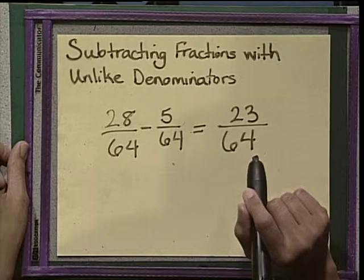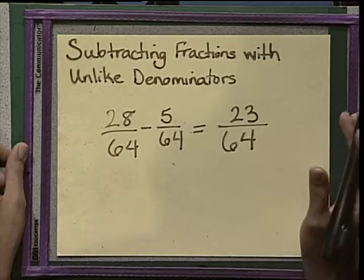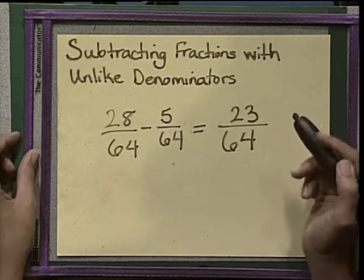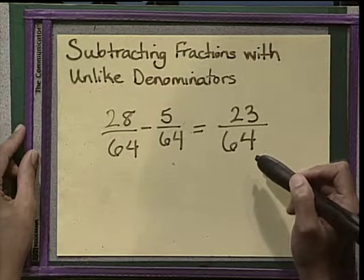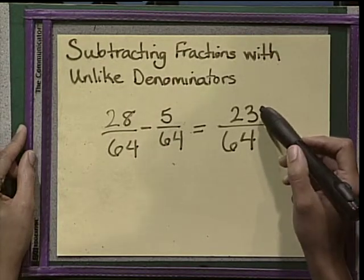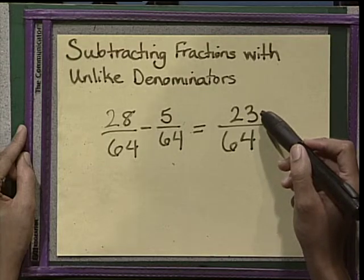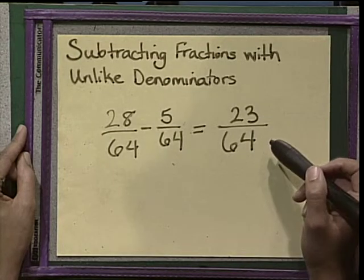You want to check to see if your fraction is in simplest form. A lot of times the directions will ask for simplest form. In this case, it is. We know that because there is no other number that fits inside of 23 besides 1 and 23. 23 is a prime number.